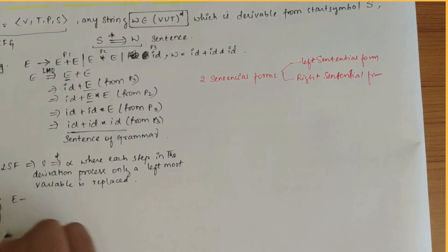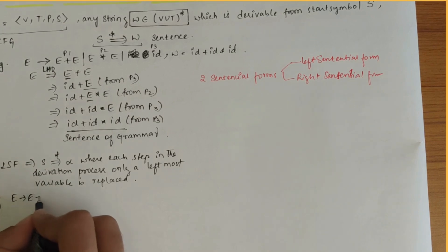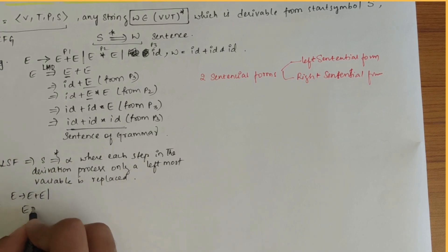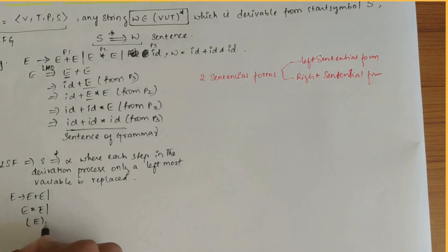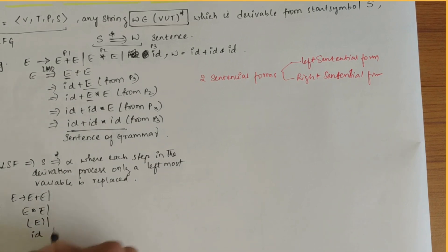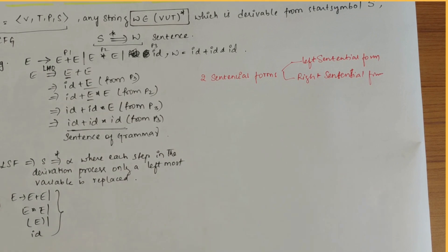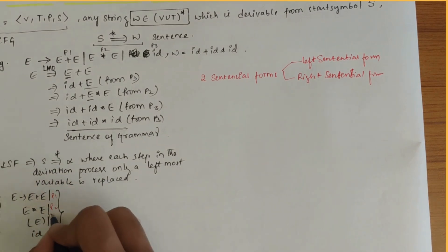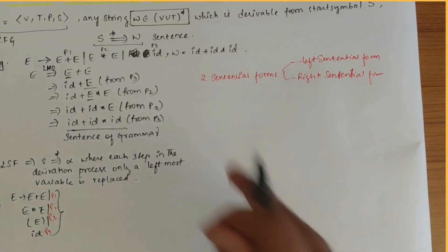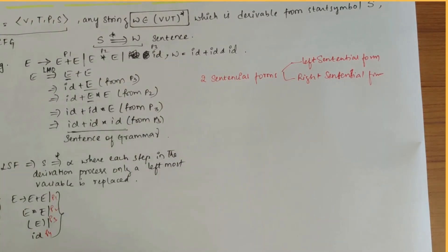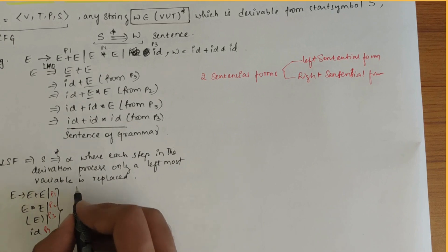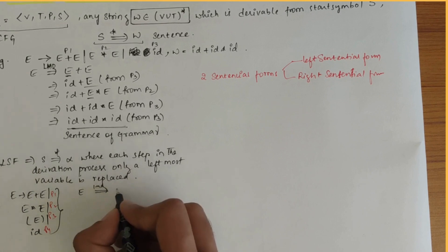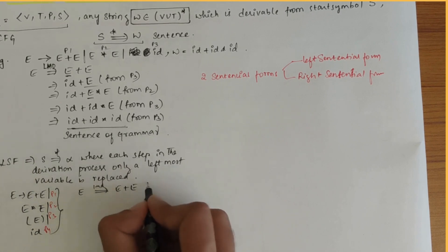Let's write the grammar first. E derives E plus E, or E star E, or bracket E, or ID. These are the four productions — P1, P2, P3, and P4. Like how we did in the previous example, it's the same here also. Let's write the leftmost derivation (LMD). First, E derives E plus E, that is P1.